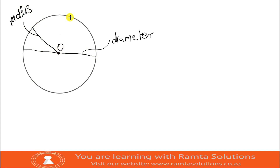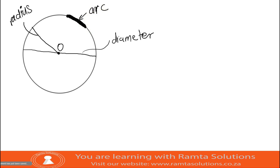Now I want you to draw a big line on the circumference, just a big line the way that I'm doing it. And this line here we call it an arc. It is a portion of the circumference of a circle.